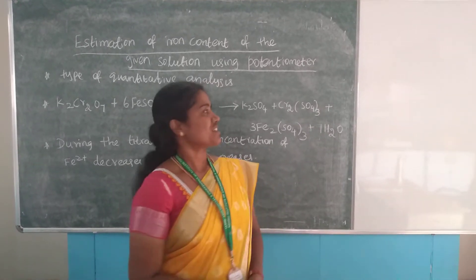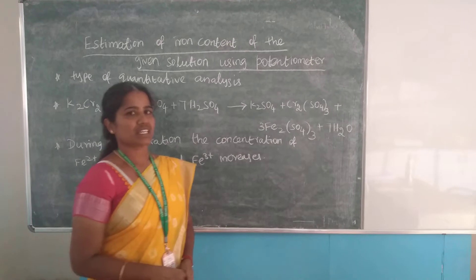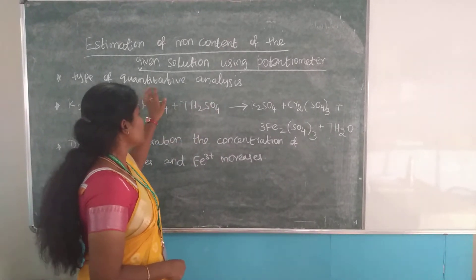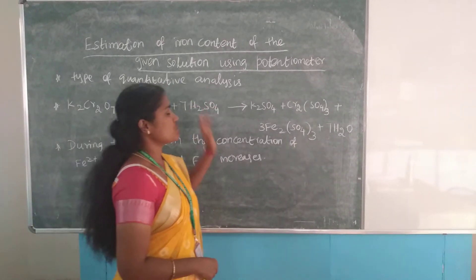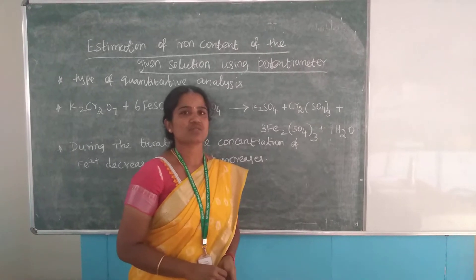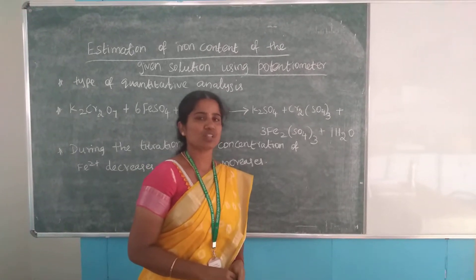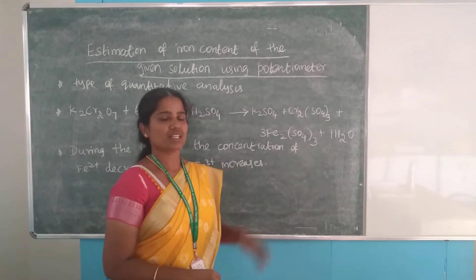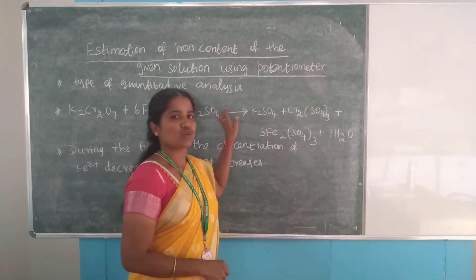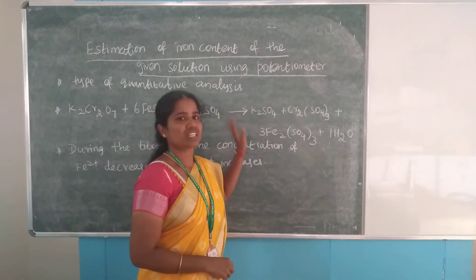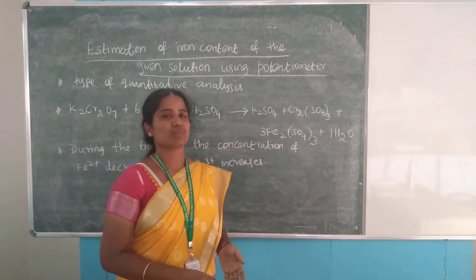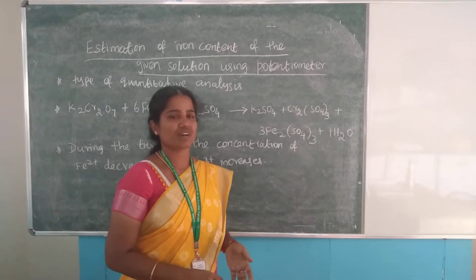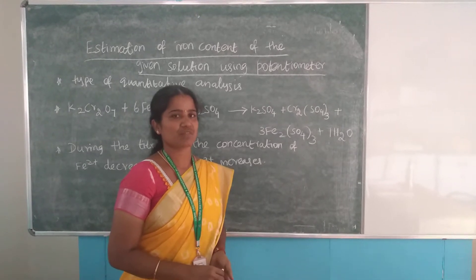First we need to see what is the principle in this experiment. Potentiometric estimation is a quantitative analysis, so we can find out the amount of ion present in the solution. We are measuring the potential difference created in between the two electrodes, using electrodes for measuring the EMF of the solution.